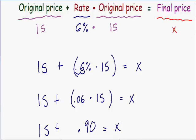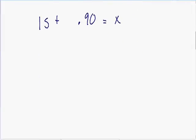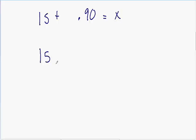Now in order to solve for x, the only thing we need to do is add 15 with 0.90. So 15 plus 0.90 is 15.90, and this is equal to our final answer, x. Going back to our original problem: we had an original price of $15, a sales tax of 6% which came out to $0.90, and $15 plus $0.90 gives us our final price of $15.90.